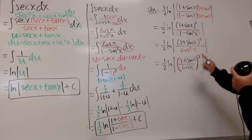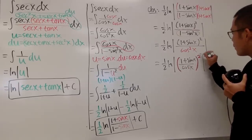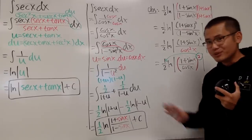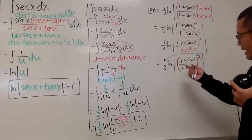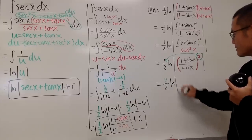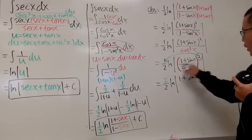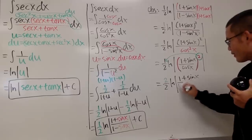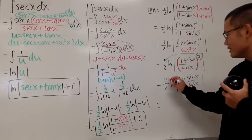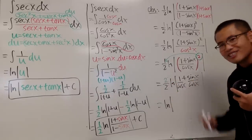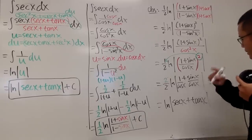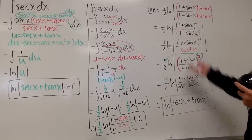Because we're inside a natural log, we can bring the exponent 2 to the front as a coefficient — this is the log power rule, not the derivative power rule. So we get (2 × 1/2) ln|(1+sin x)/cos x|, and the 2 and 1/2 cancel to give 1. Then 1/cos x = sec x and sin x/cos x = tan x, so we get ln|sec x + tan x|. This confirms the two expressions are equal.